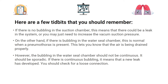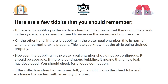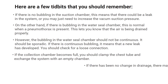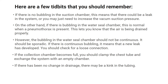However, the bubbling in the water seal chamber should not be continuous — it should be sporadic. If there is continuous bubbling, it means that a new leak has developed; in this case you should check for a loose connection. If the collection chamber becomes full, you should clamp the chest tube and exchange the system with an empty chamber. And if there has been no change in drainage, there may be a kink in the tubing.